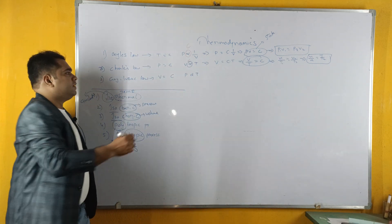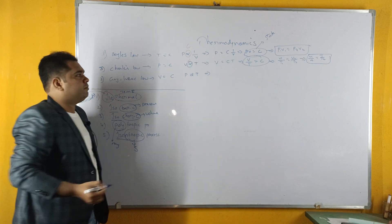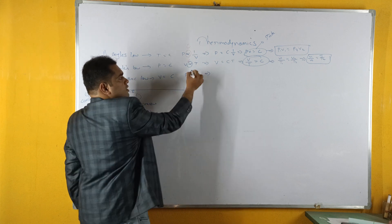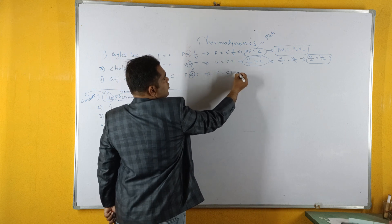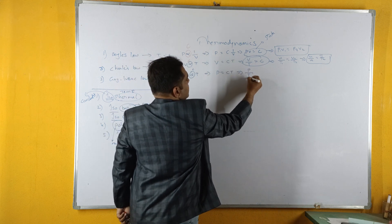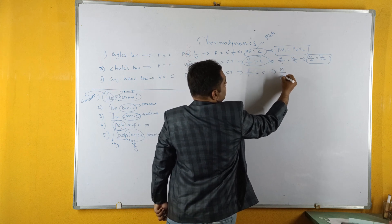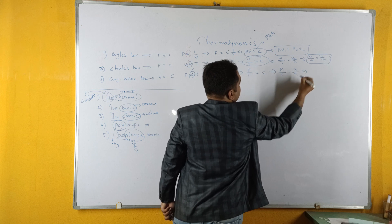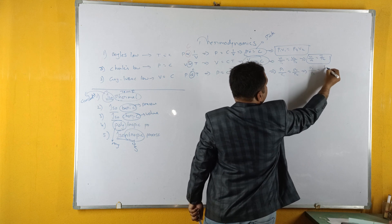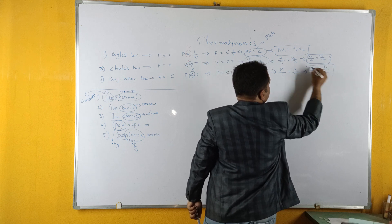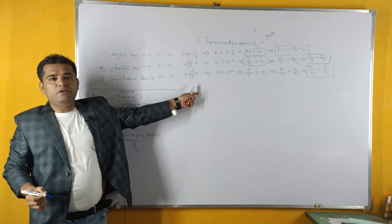Next, coming to Gay-Lussac's law: it states that P is directly proportional to T. To remove the proportionality constant, we use C, giving P equals C times T, which implies P/T equals constant. That implies P1/T1 equals P2/T2, which can be rearranged as P1/P2 equals T1/T2. This is the relation from Gay-Lussac's law for a process between two points.